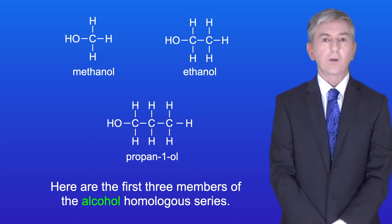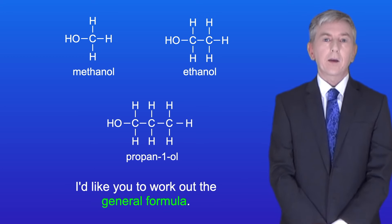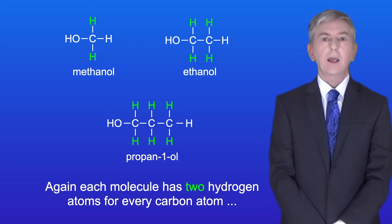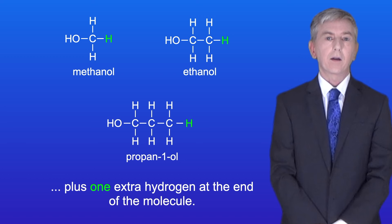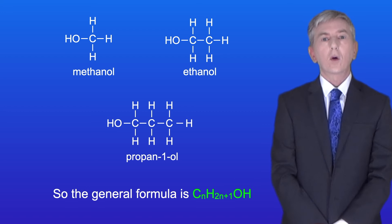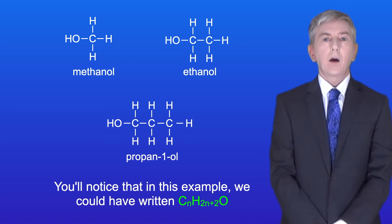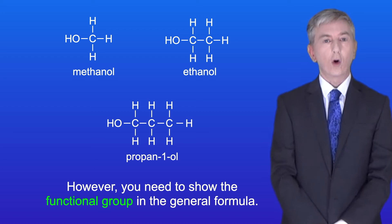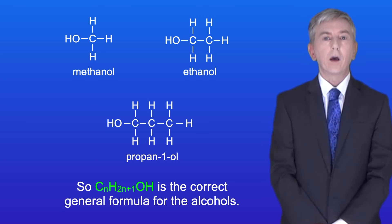Here are the first three members of the alcohol homologous series. Again I'd like you to look at the general formula so pause the video and try this yourself. Each molecule has two hydrogen atoms for every carbon atom plus one extra hydrogen at the end of the molecule. Each molecule also has one alcohol group which is OH. So the general formula is CnH2n+1OH. Now you'll notice that in this example we could have written CnH2n+2O, however you need to show the functional group in the general formula. So CnH2n+1OH is the correct general formula for the alcohols.